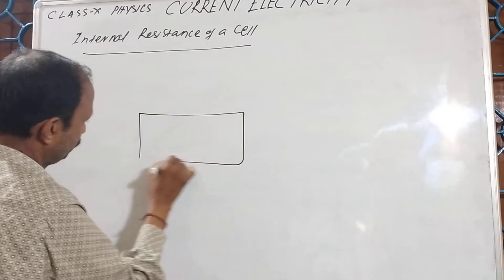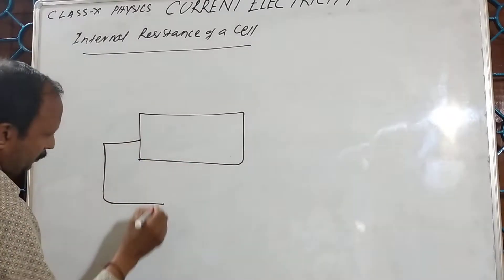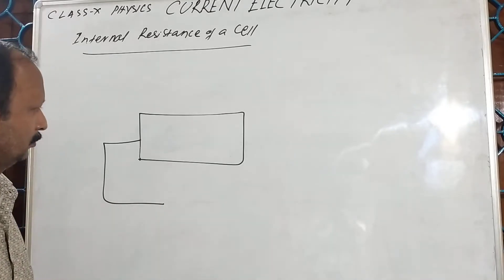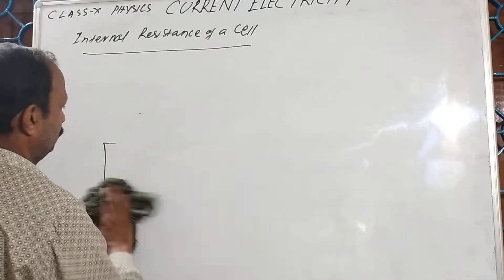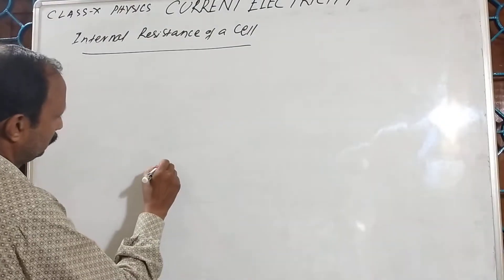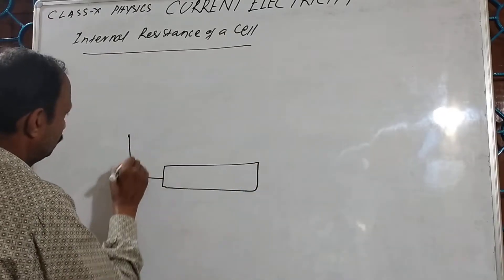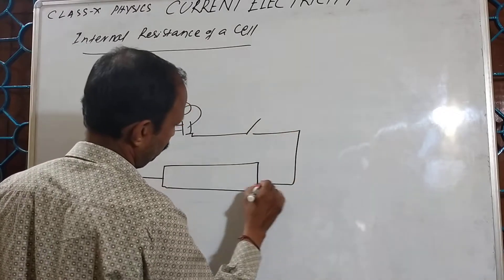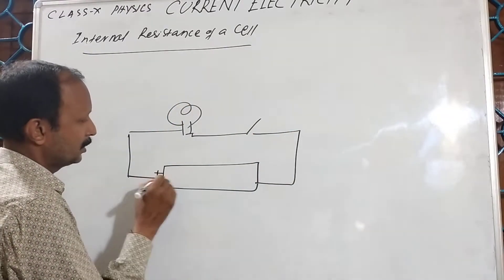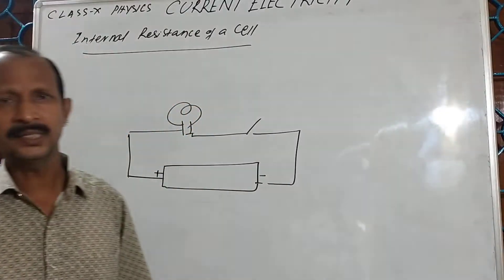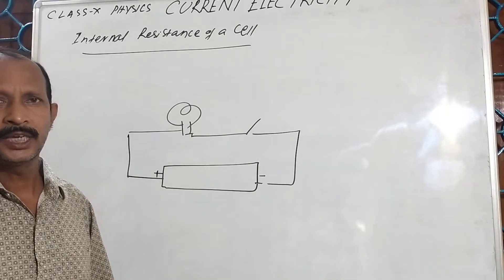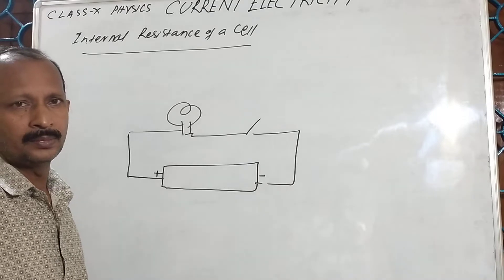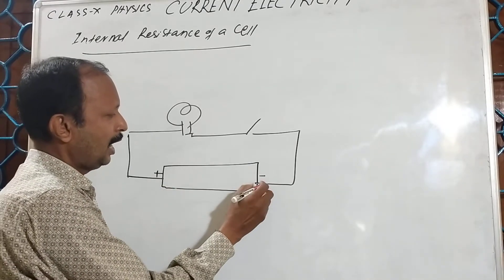Suppose this is a cell. Now this cell is connected in a circuit. This is the positive terminal, this is the negative terminal. Inside this cell, electrolyte is there — chemicals are there. So when the cell is connected in a circuit, current flows inside this cell as well as outside this cell.